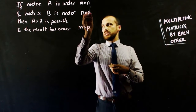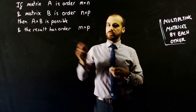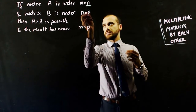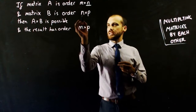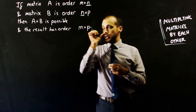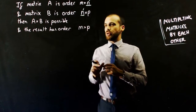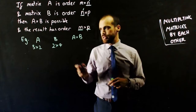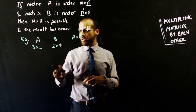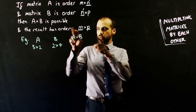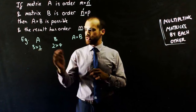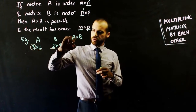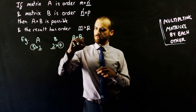If matrix A is order M×N and matrix B is order N×P, then A times B is possible — you can multiply them — and the result has order M×P. What that means is: if the first matrix has a certain number of columns, and the second matrix has that same number of rows, then you are allowed to multiply them. For example, if A has 3 rows and 2 columns, and B has 2 rows and 4 columns, then you are allowed to multiply them, because the columns in the first one match the rows in the second one.